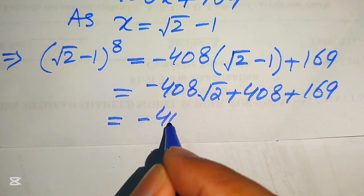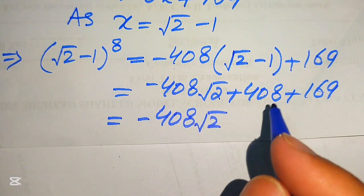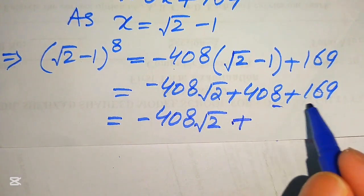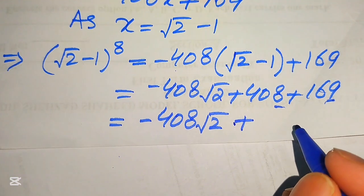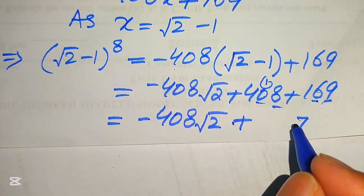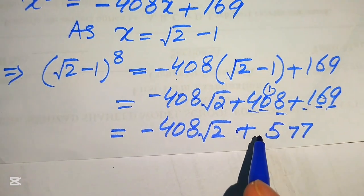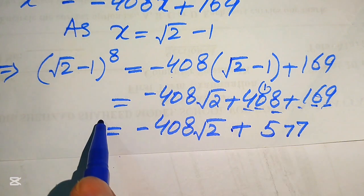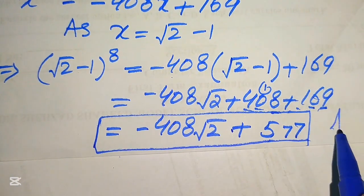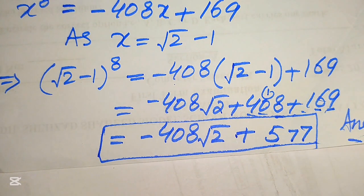Adding the constants 408 plus 169: 8 plus 9 is 17, write 7 carry 1; 0 plus 6 plus 1 is 7; 4 plus 1 is 5 — giving 577. So the final simplified answer is 577 minus 408 times the square root of 2. This is our final answer. Thank you so much for watching. Please subscribe to the channel for more exciting videos.